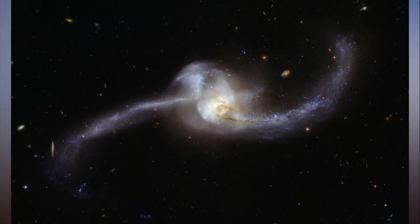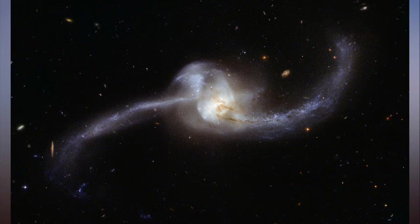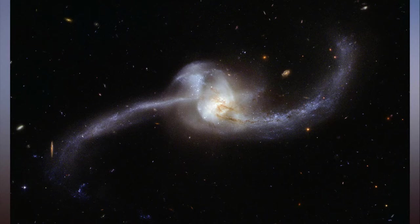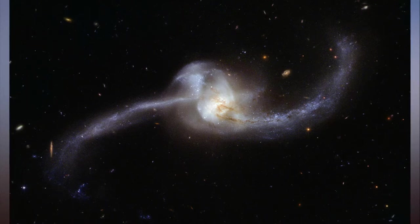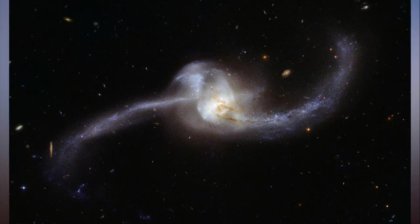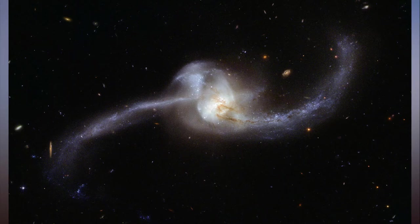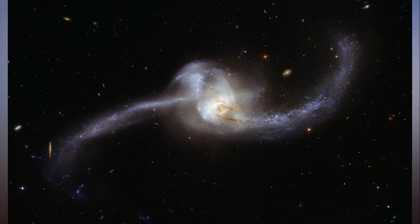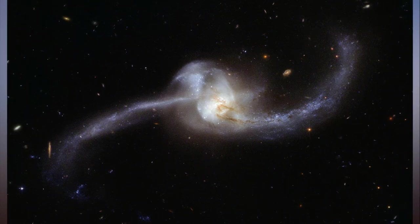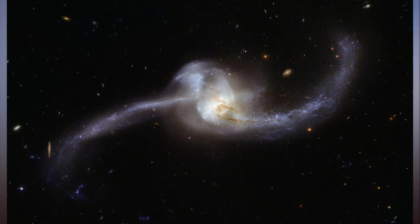The gravitational field created by a cluster of galaxies called SPTCLJ06155746 that sits between us and SPT0615JD distorted light in such a way that the image could be captured. The gravitational field of the massive foreground galaxy cluster not only amplified the light from the background galaxy but also smeared the image of it into an arc about two arcseconds long, NASA explained.